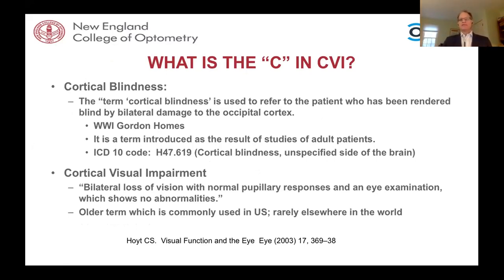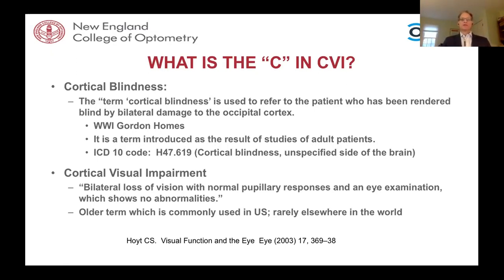What's the C in CVI, and where did it come from? About a century ago, around World War I, soldiers surviving gunshot wounds to the brain had various vision issues from damage to their occipital cortex. It was termed cortical blindness, with the understanding of essentially good eyes and a bad visual brain. That term and code is still used today to code for cortical or cerebral visual impairment, because there is no diagnosis code specifically for CVI.